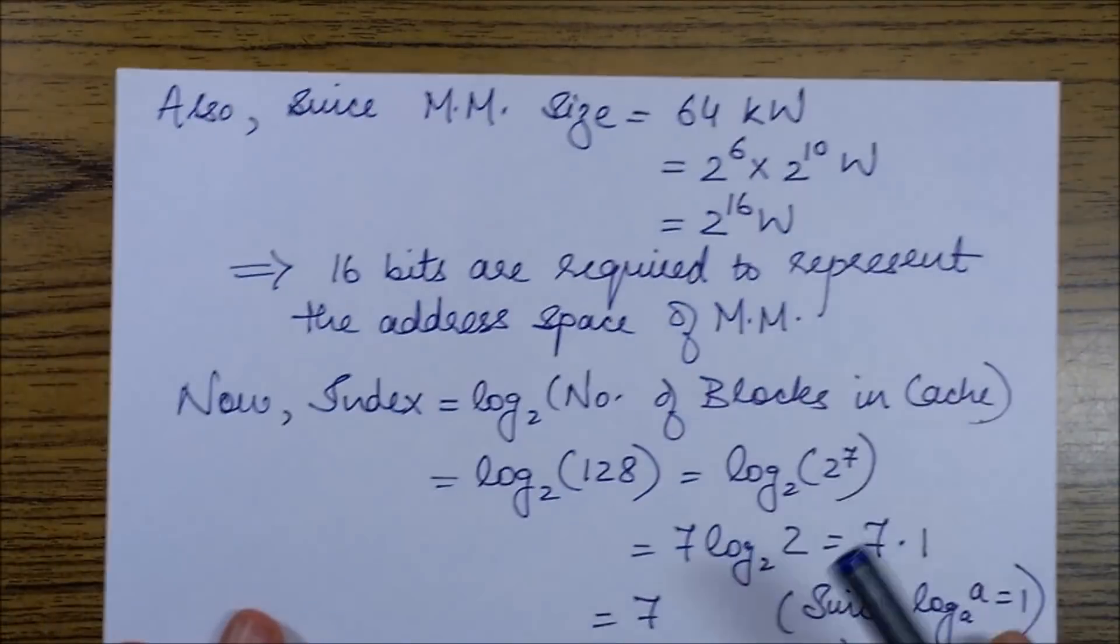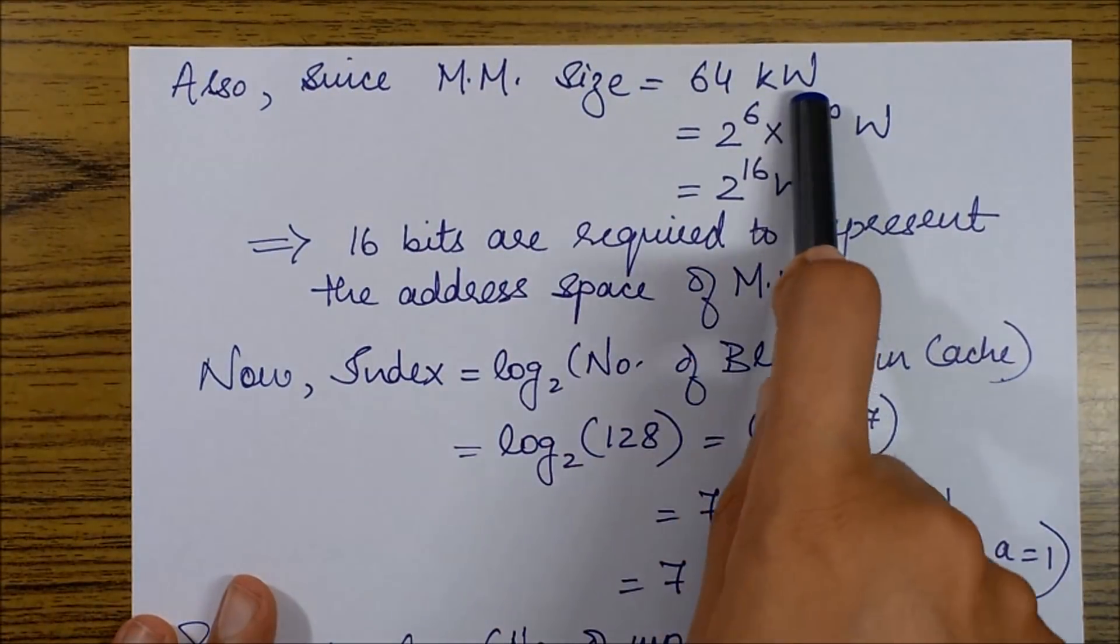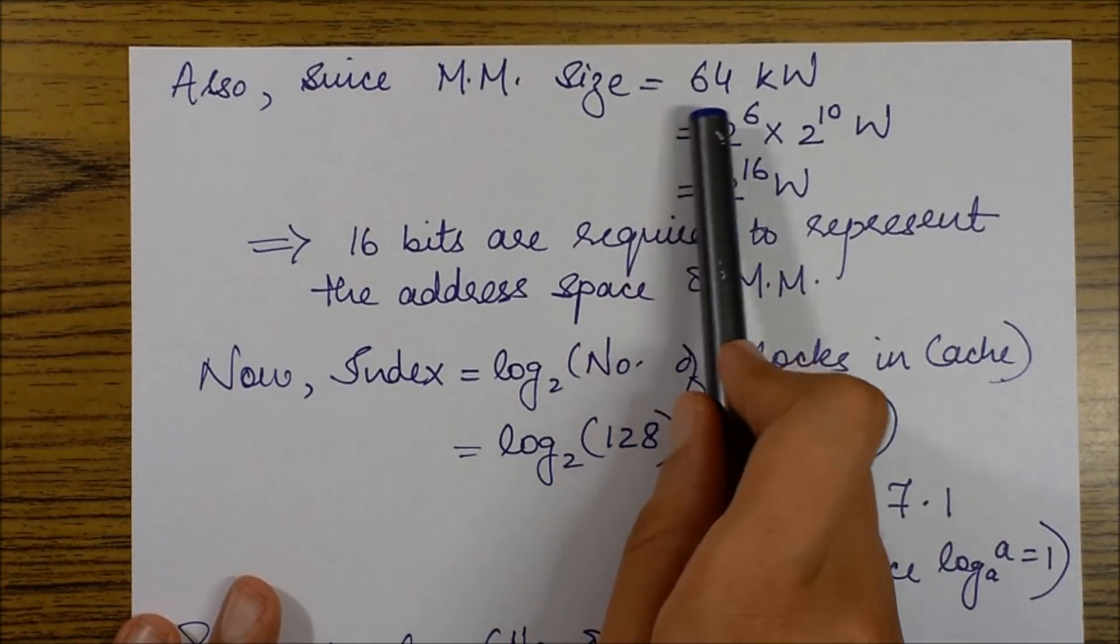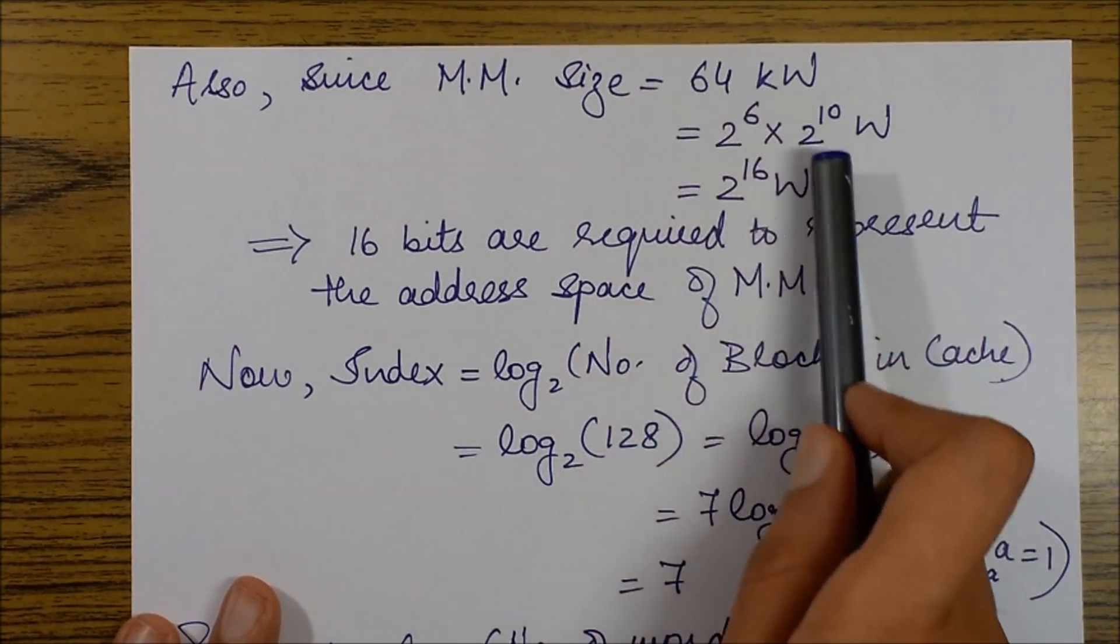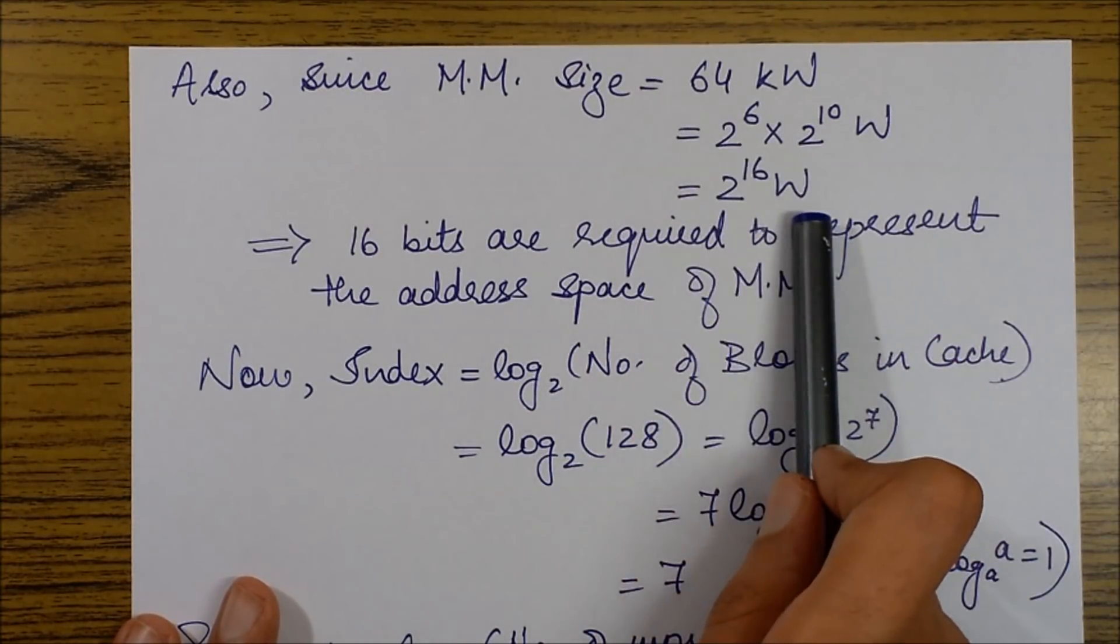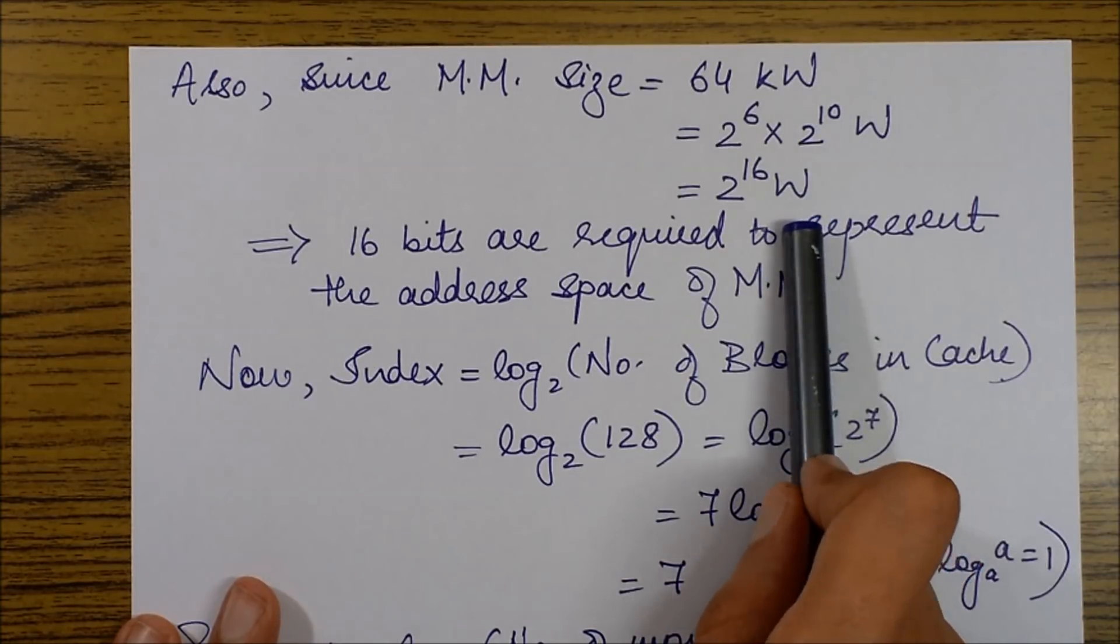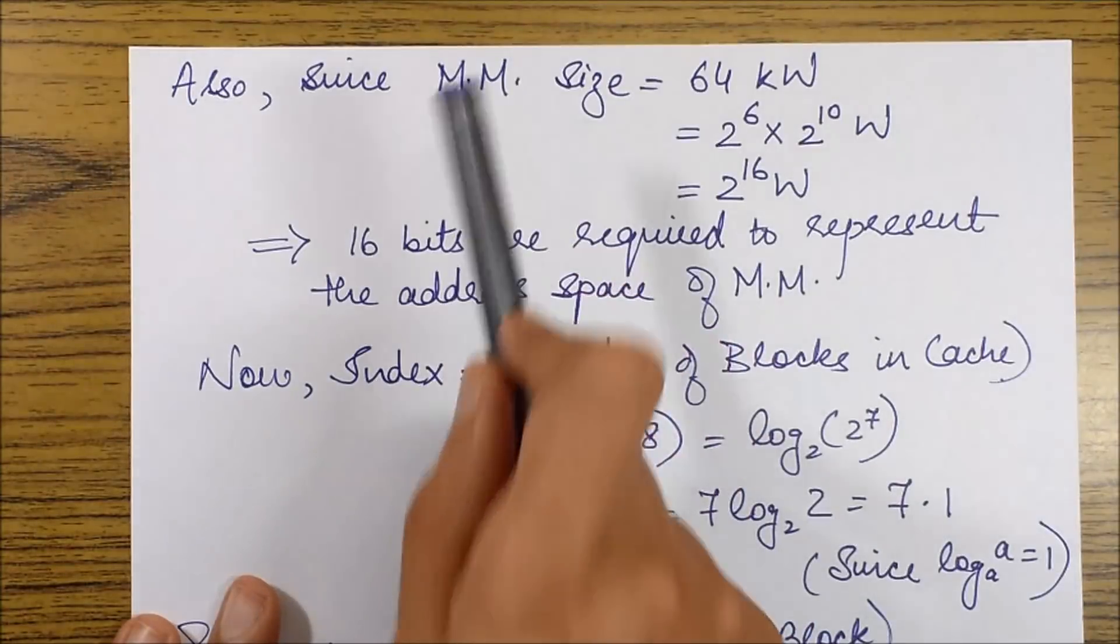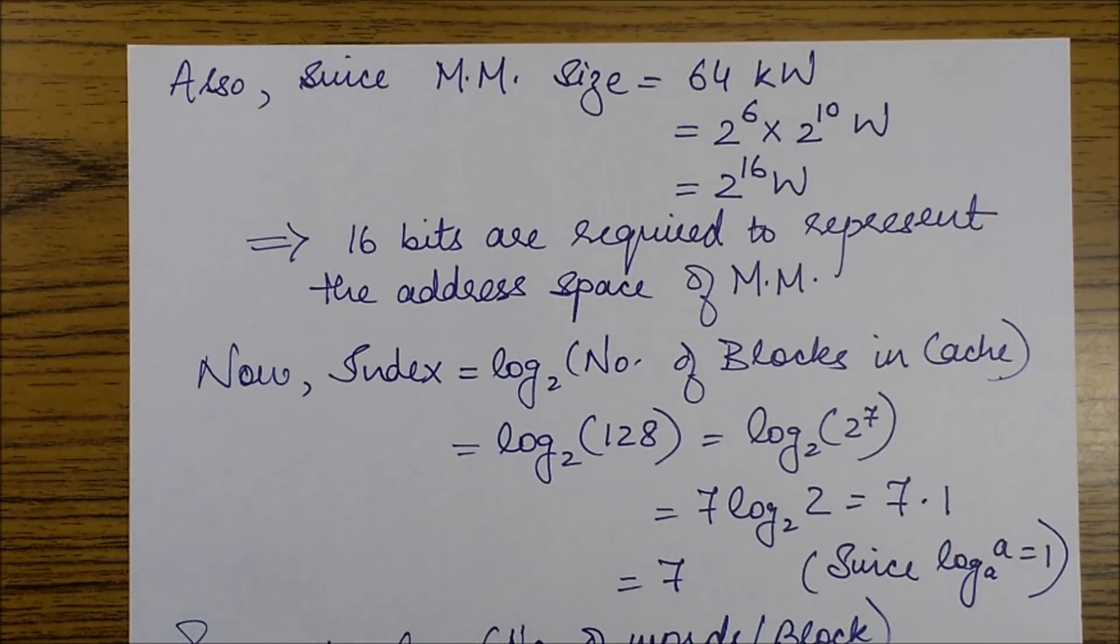Since main memory size was given to be 64 kilowords, what are the total number of bits we need to represent the main memory size? That would be 2⁶ × 2¹⁰ for this kilo, which equals 2¹⁶ words. So we need a total of 16 bits to represent all the addresses of main memory.